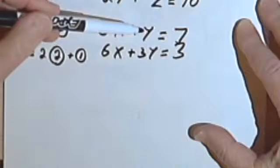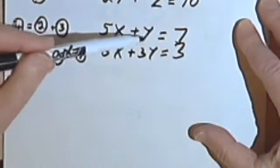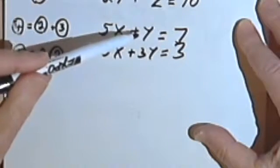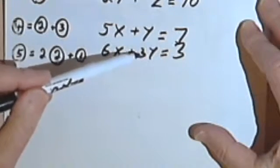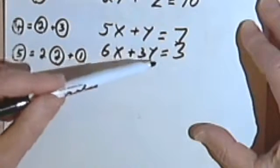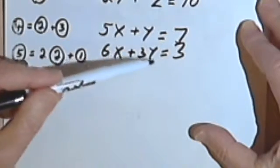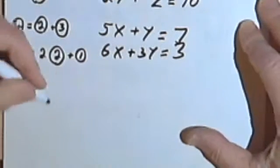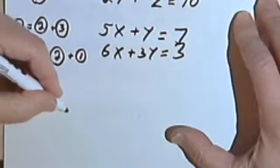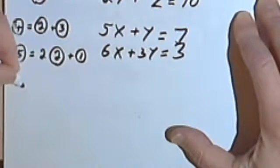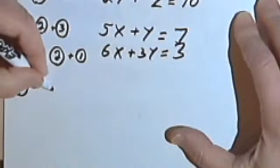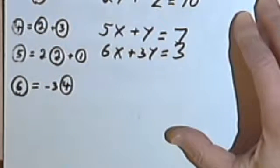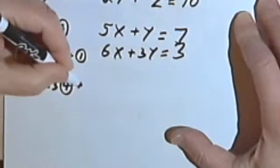It looks like the easy one to eliminate would be the y. Since I have a y in equation number 4, I can multiply that by negative 3. I'll then have a negative 3y, add it to equation number 5, which has a positive 3y, and that will get rid of my y's. So I want to make equation number 6, which is going to be negative 3 times equation number 4 plus equation number 5.